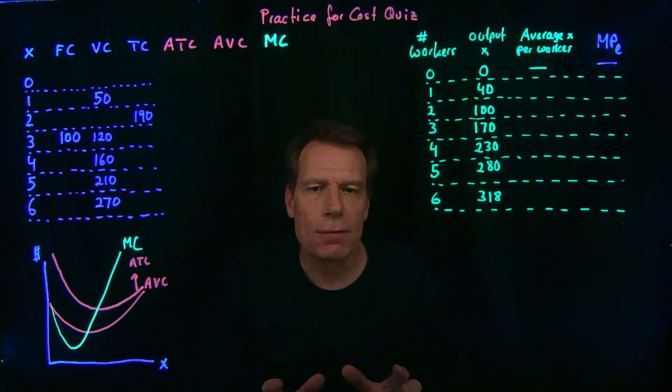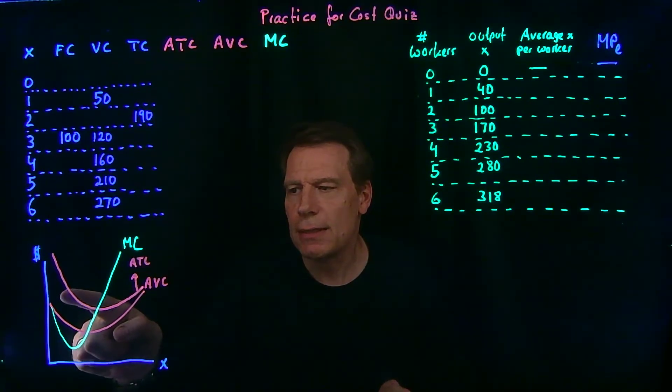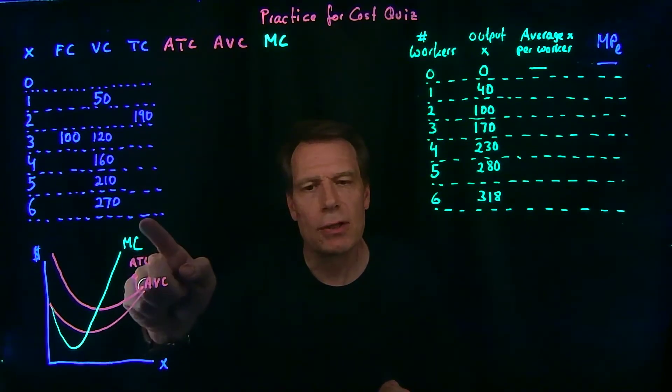You can then ask yourself if the costs represented in this table give rise to the general shapes of cost curves that we've derived so far. In particular, is it the case that the marginal cost is initially falling and eventually increasing?